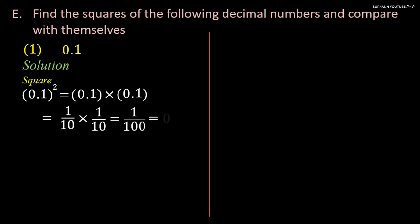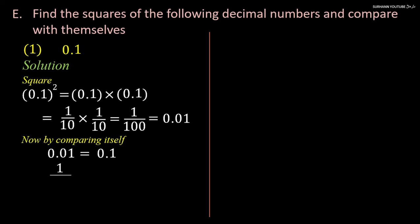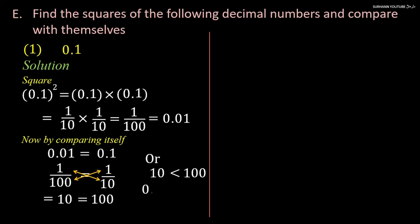We will get 0.01 as the square of 0.1. Remember, the square of a given number is always less than itself. To know which number is less than or greater than, just do cross multiplication — cross multiplication always happens between fraction values. First multiply the numerator with the other denominator, then multiply the denominator with the other numerator. You may clearly see: 10 with the square value 0.01 is less than 100, meaning the given value 0.1.